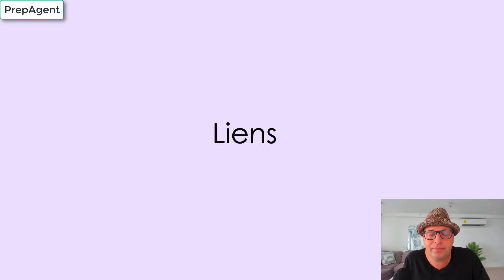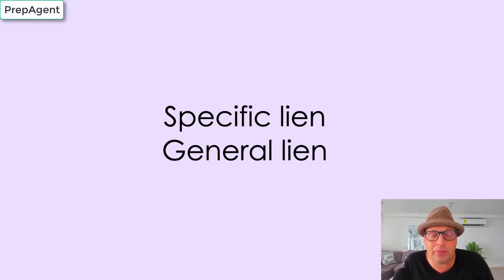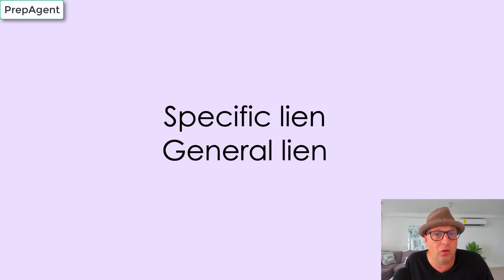Liens. A lien means you owe money. Liens fall into two categories: specific liens and general liens. A specific lien means if you don't pay, they could go after one thing specifically — namely your house. A general lien means if you don't pay, they could take everything. Examples of specific liens include your mortgage, property taxes, or mechanic's liens. Examples of general liens include not paying your income tax, or if you lose a judgment in court — a judgment lien is a general lien, meaning they could come after everything.